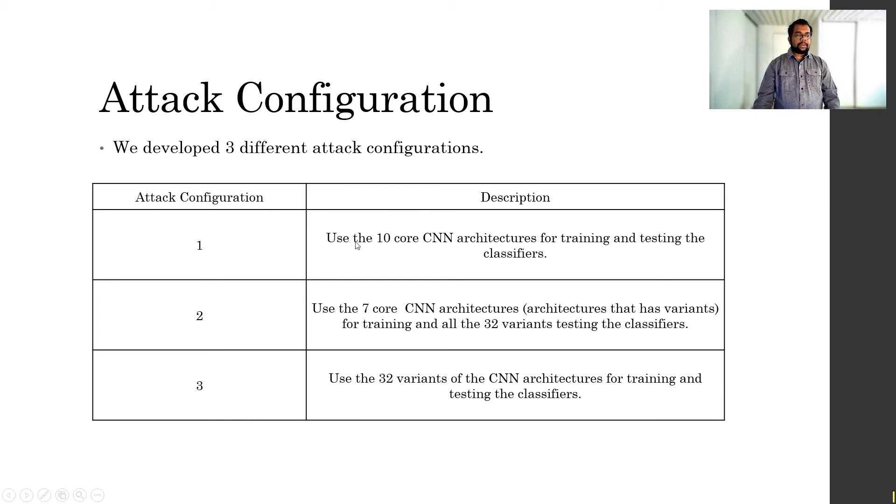We have three different attack configurations here. The first attack configuration focuses on the use of the core 10 CNN architectures for both training and testing purposes. This is to assume that the attacker has access to this 10 core training data. If he trains his classifier with these 10 core architectures and gets power data information from the victim and tests against this, he can find out what architecture that victim is using.